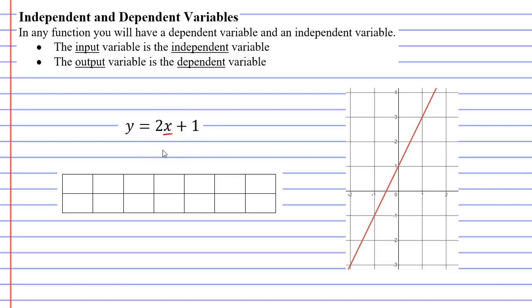The input variable is known as the independent variable, and the output variable is known as the dependent variable. So which one is which? Well, on a table of values, the input variable is always put at the top, and the output variable is always put on the bottom row.